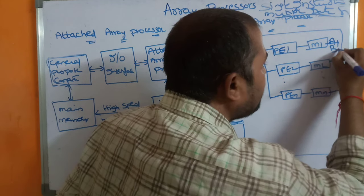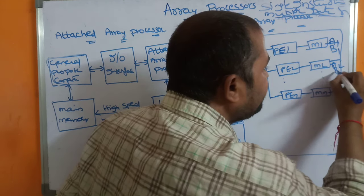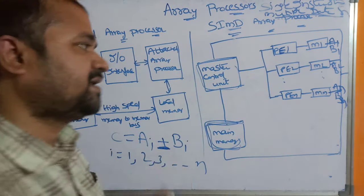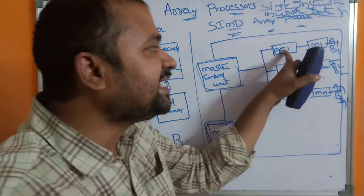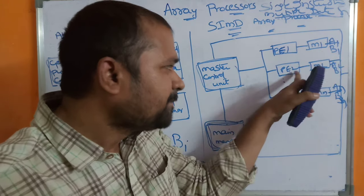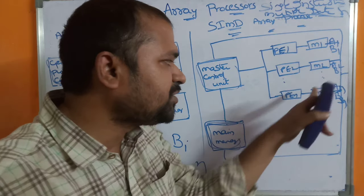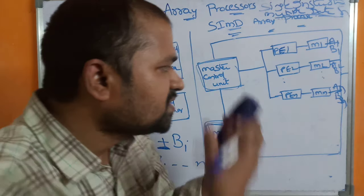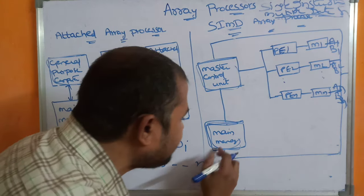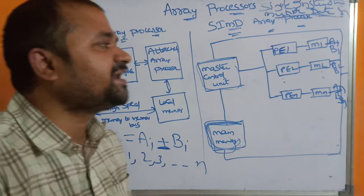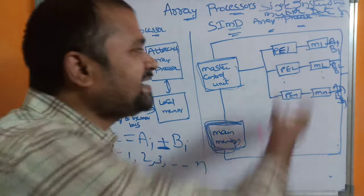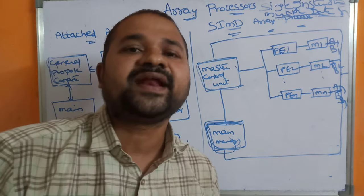A1 and B1 will be stored in M1, A2 and B2 will be stored in M2, A3 and B3 and so on will be stored in their respective local memories. PE1 performs A1 plus B1, PE2 performs A2 plus B2, and so on in parallel. Once that addition operation is performed, the corresponding result is transferred back to the main memory. In this way, we can improve the performance of the system by using multiple processors. This is about array processing.